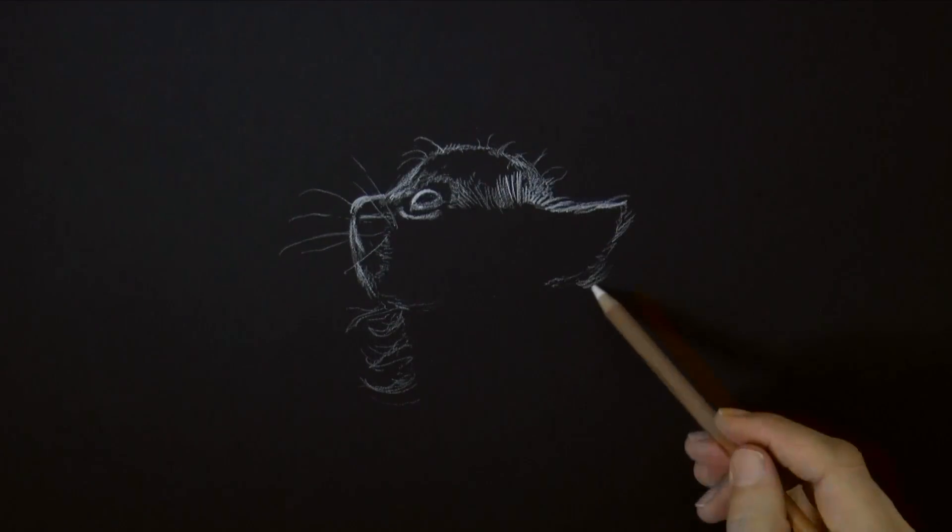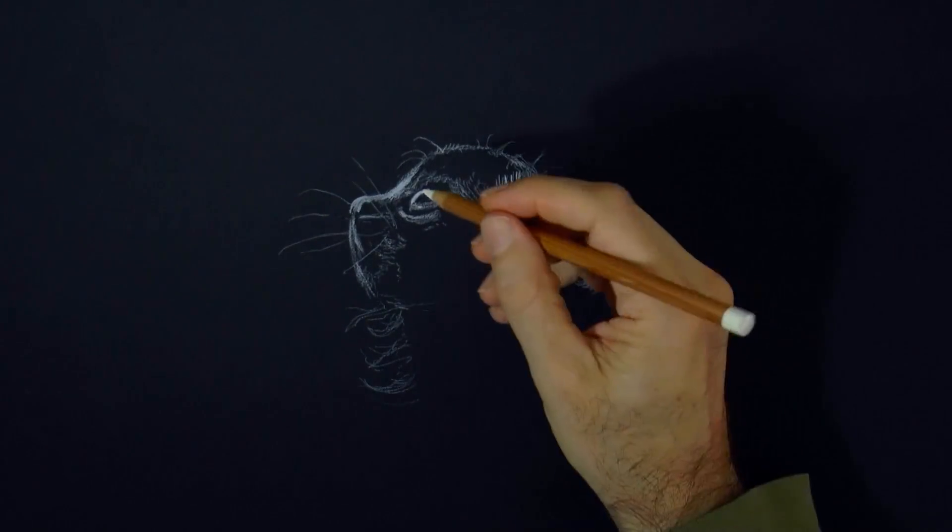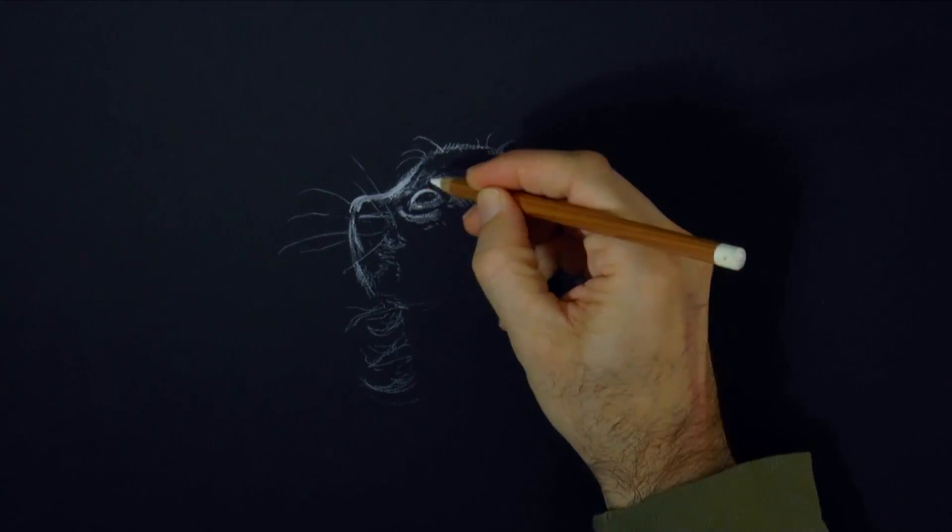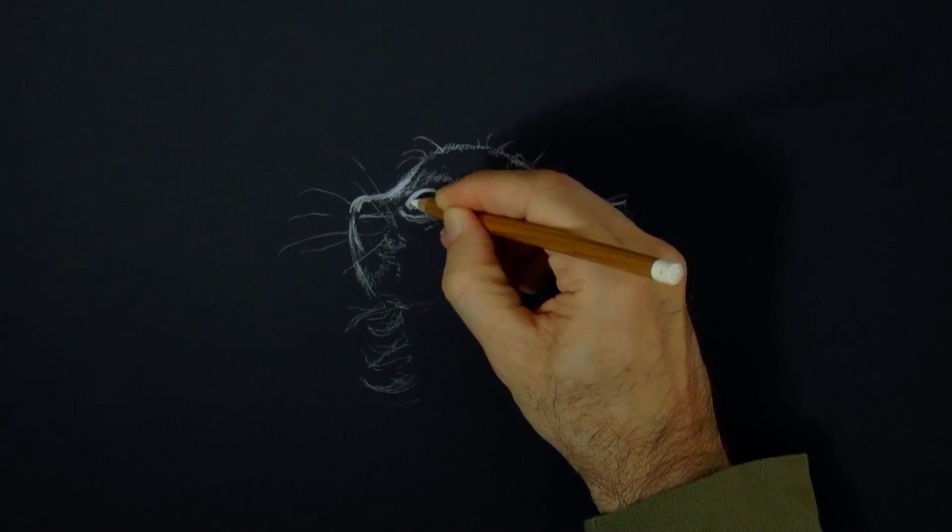Let's do the lower part of the ear, and then I will make the eye just a little bit bigger, I think it should be a little bit bigger. I just extend my half circle a little bit.